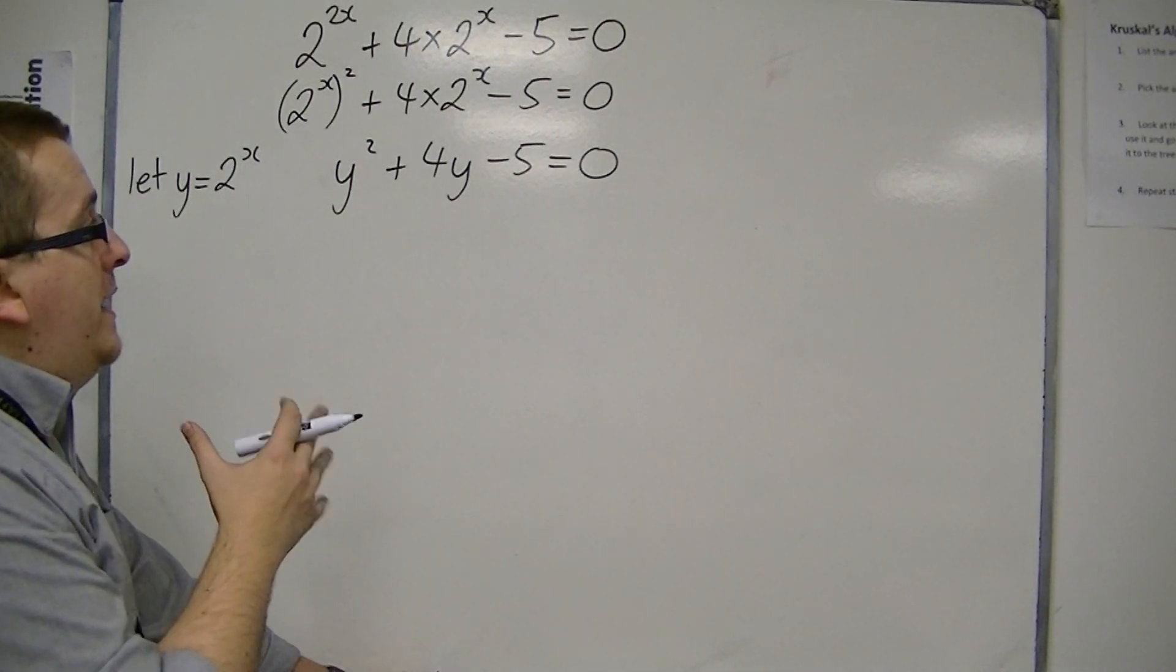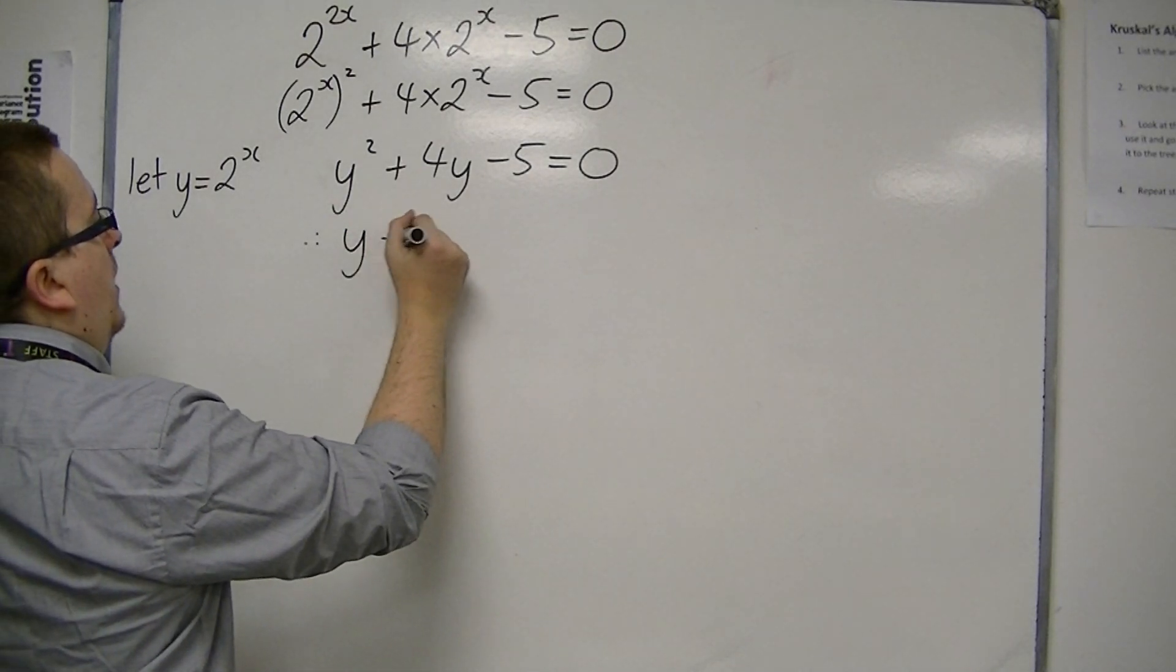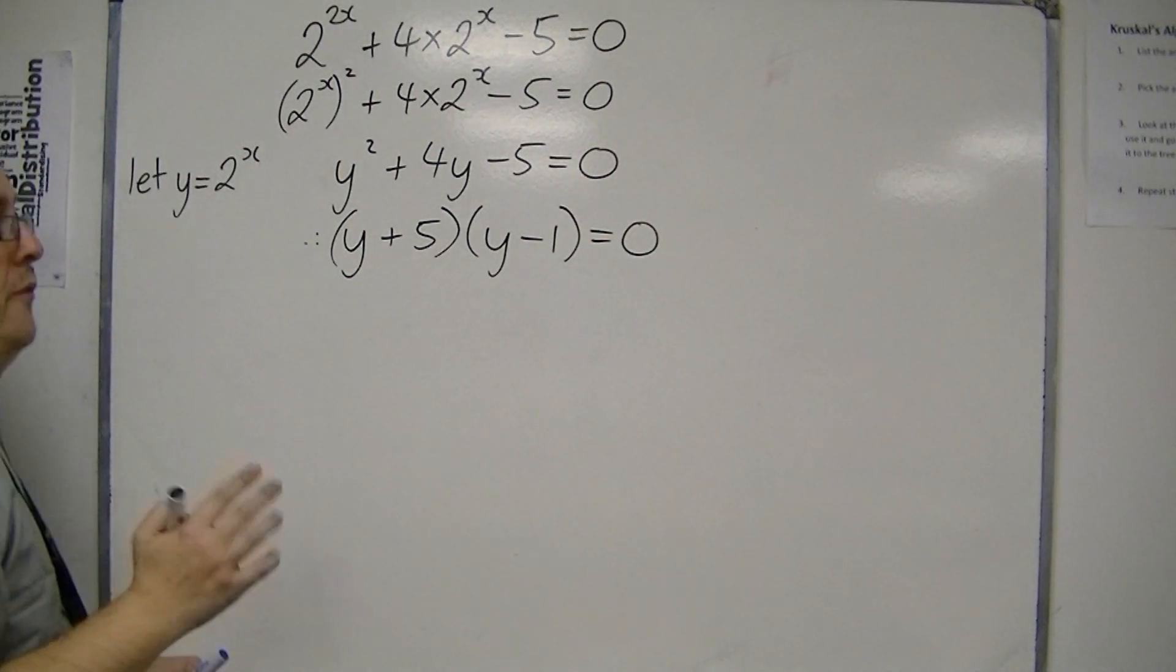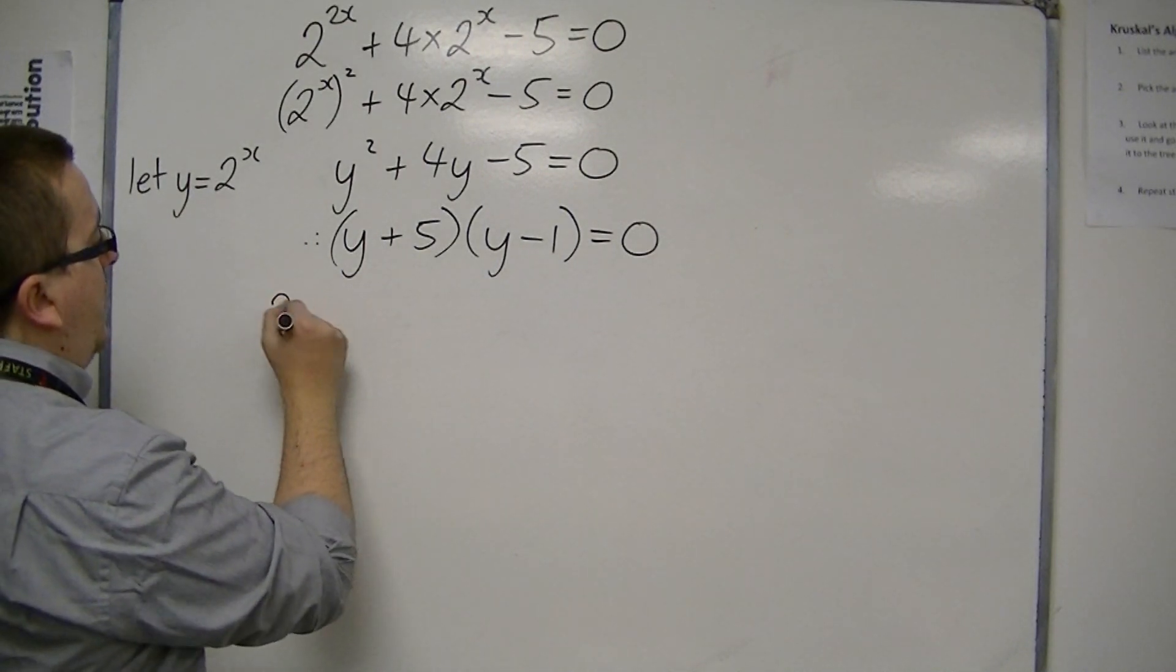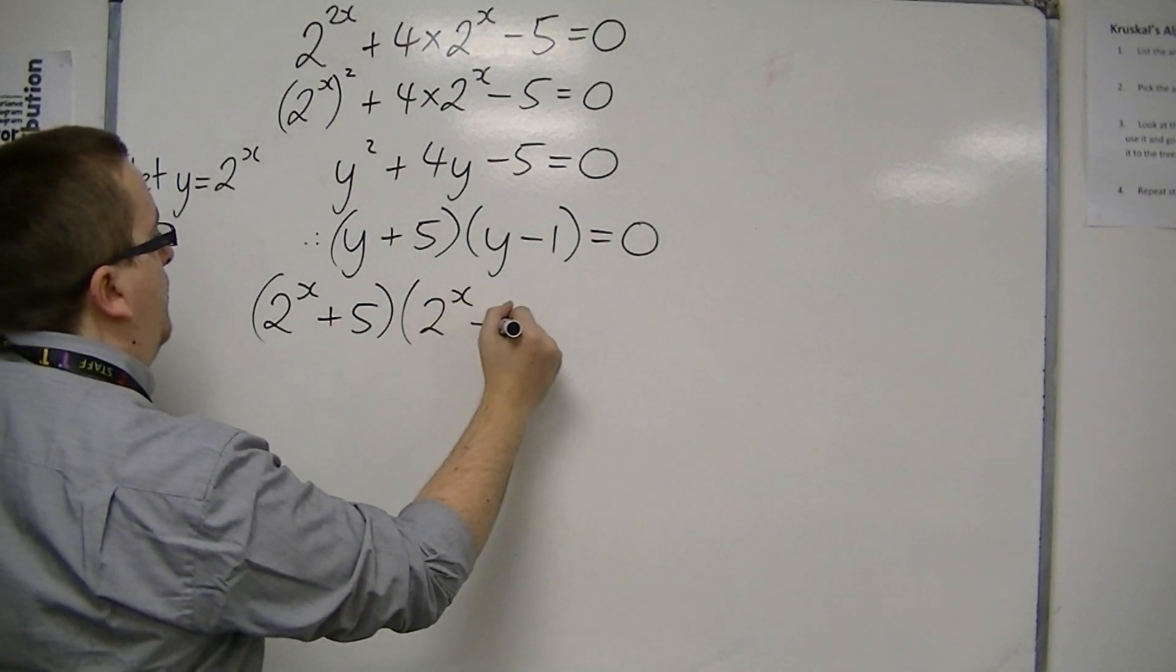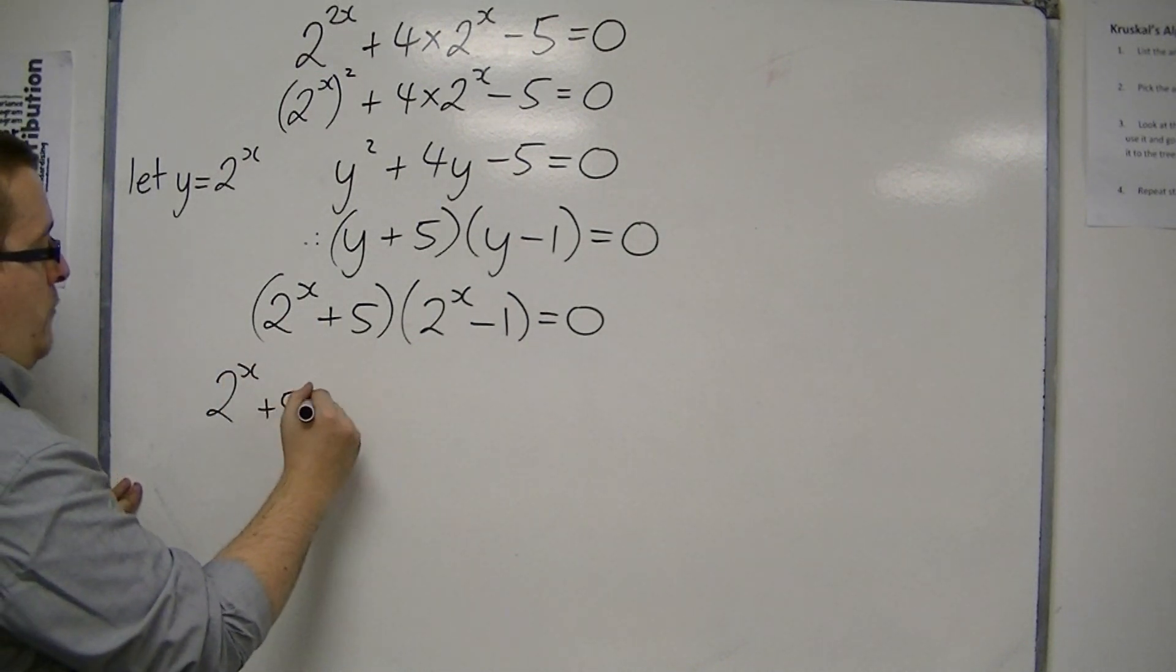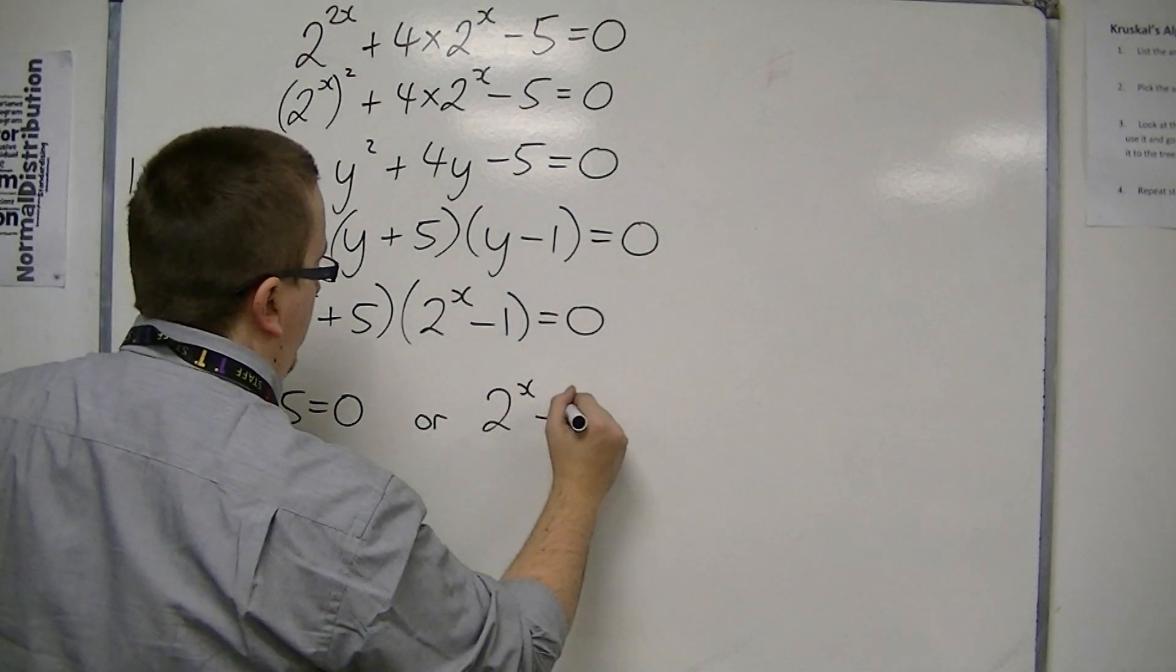This is a quadratic that can be factorised. So I'm going to get y plus 5 and y minus 1. So if I now put the y equals 2 to the x back in, I get 2 to the x plus 5 times 2 to the x minus 1 is 0.